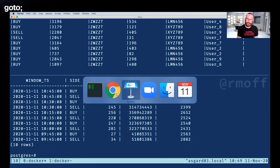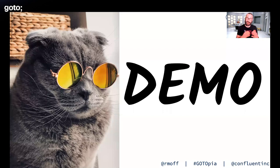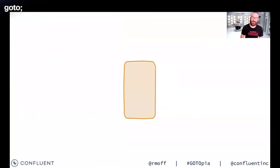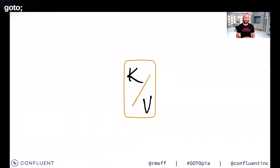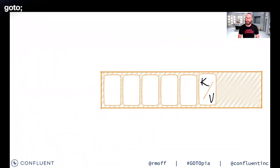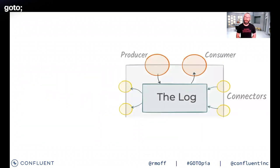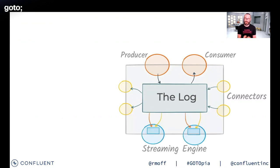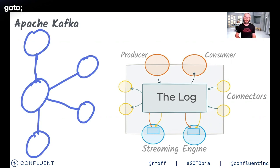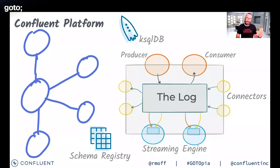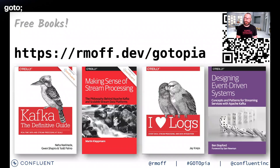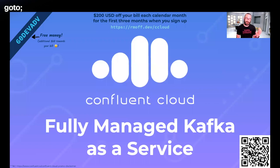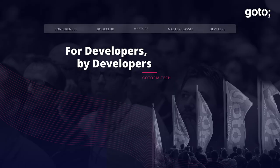I'm out of time, so here's a quick recap: Events are all around us and model the real world. We store them as key-value pairs in an immutable append-only distributed commit log. At the heart of things is the log, with producer and consumer APIs, Kafka Connect providing the integration API, and Kafka Streams for stream processing capabilities — this gives us Apache Kafka. Around Apache Kafka, Confluent Platform adds ksqlDB and schema registry to build a more complete ecosystem for applications and pipelines. Go and download the free books from our website, try out Confluent Cloud, and visit developer.confluent.io to learn more and try things out.